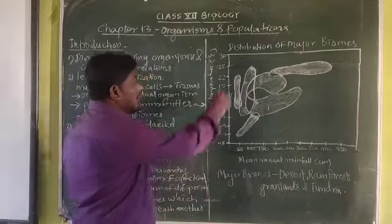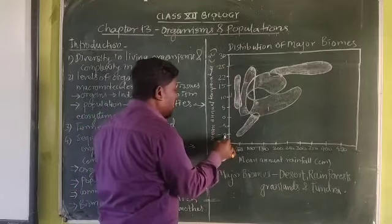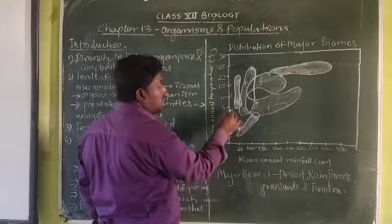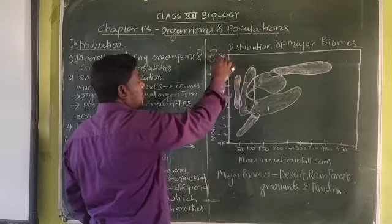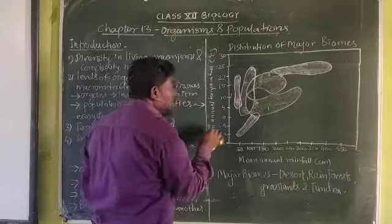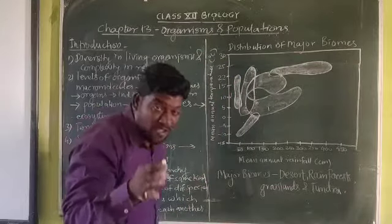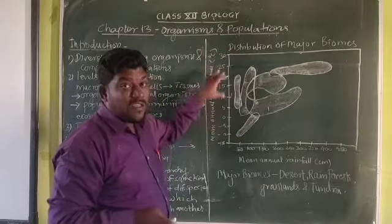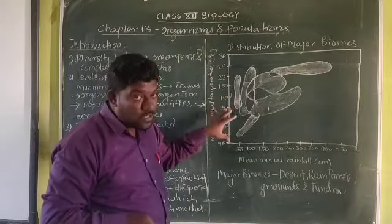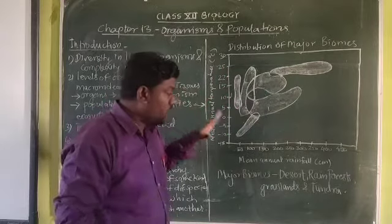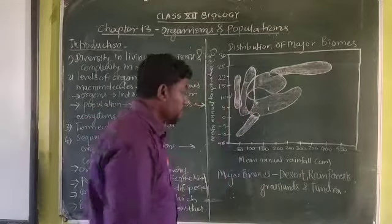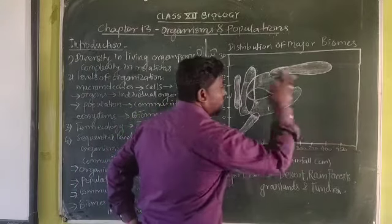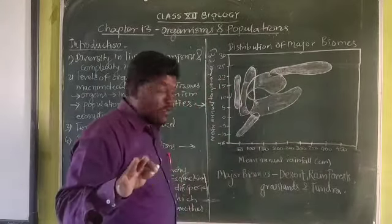Look carefully at the graph. The temperature axis shows values: zero, minus five, minus ten, minus fifteen, five, ten, fifteen, twenty-two, twenty-five, and thirty. This represents the mean annual temperature. The mean annual rainfall is shown: fifty centimeters, one hundred centimeters, one hundred fifty up to four hundred fifty centimeters.